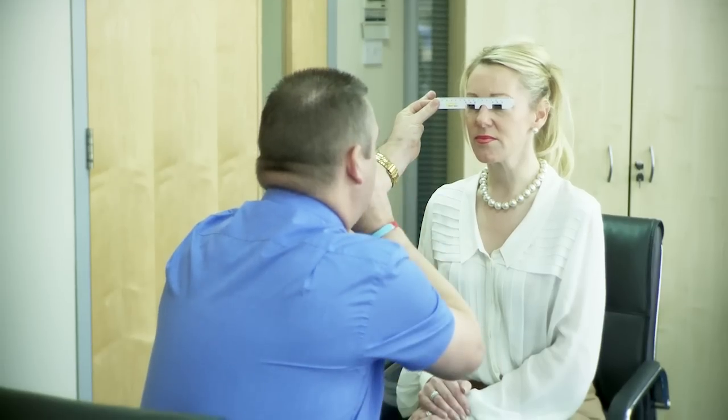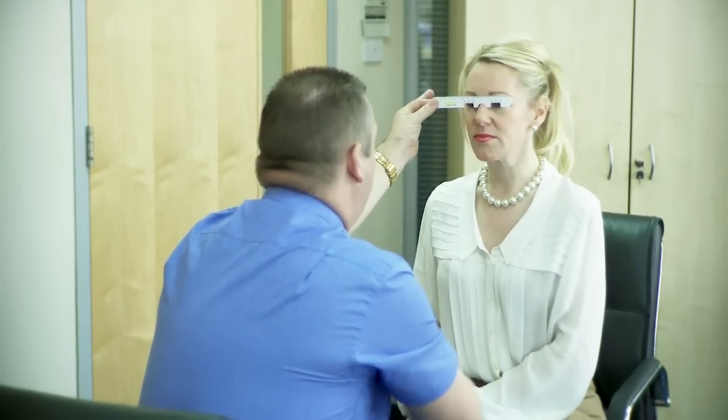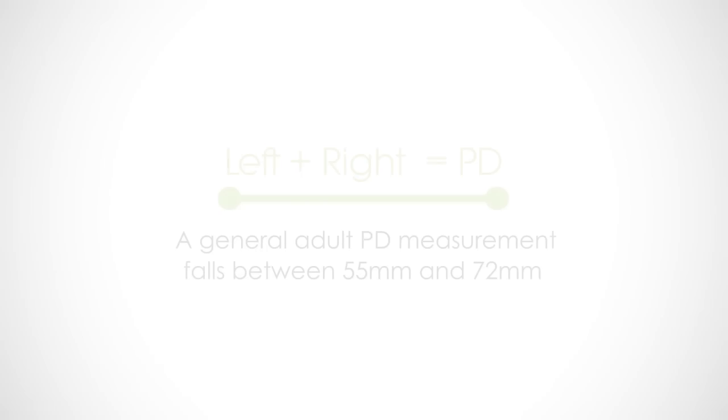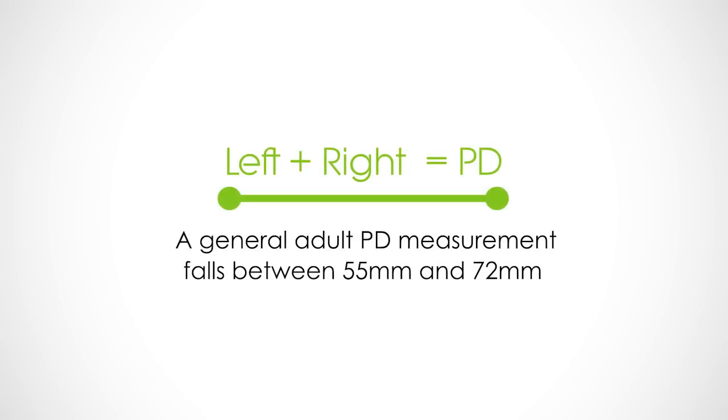Repeat the process several times until you are happy with the accuracy of the results. In general, an adult PD measurement will fall somewhere between 55mm and 72mm.